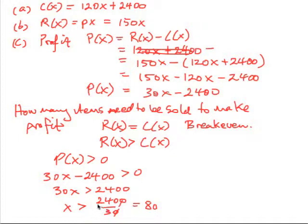So we need to have more than 80 items sold to make a profit. So to make a profit, at least 81 items need to be sold.